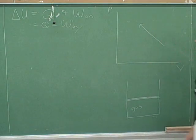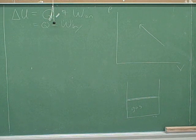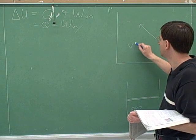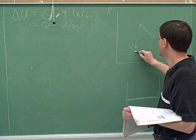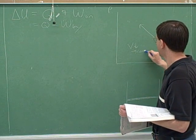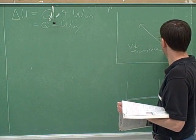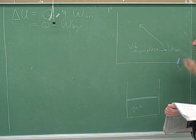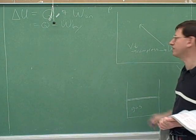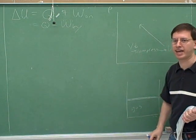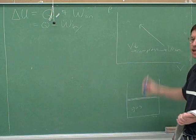When the volume is decreasing — moving to the left — that is work on the gas. When we're moving to the left in the PV graph, we must be doing work on the gas; that's what's compressing it.